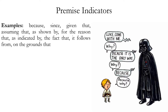Premise indicators include words such as 'because' or 'since' — those are the most common. Other premise indicators include: given that, assuming that, as shown by, for the reason that, as indicated by, the fact that, it follows from, and on the grounds that. One thing to keep in mind is the difference between the premise indicator 'because' and the conclusion indicator 'because of this.' When the word 'because' appears alone before a statement, the statement that follows is the premise. When you see the whole phrase 'because of this,' the words 'of this' refer back to a previously stated premise, which is why the whole phrase indicates the conclusion.